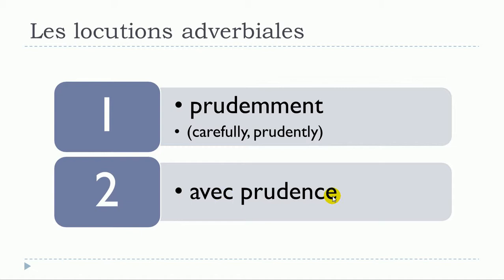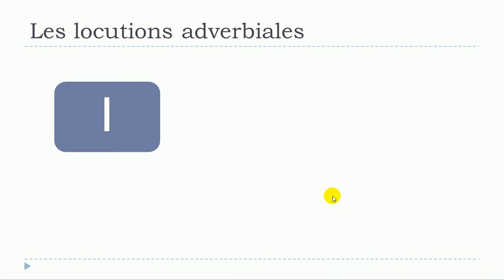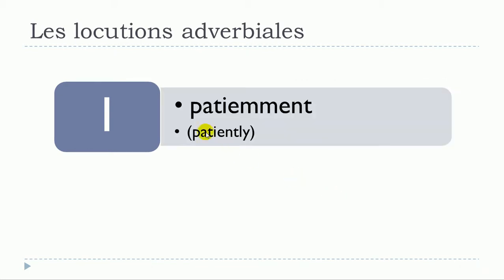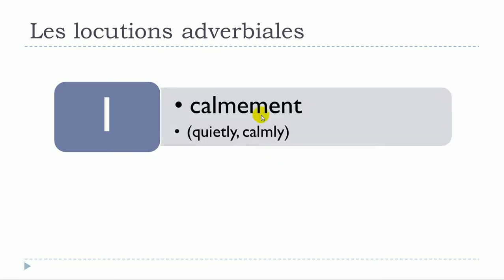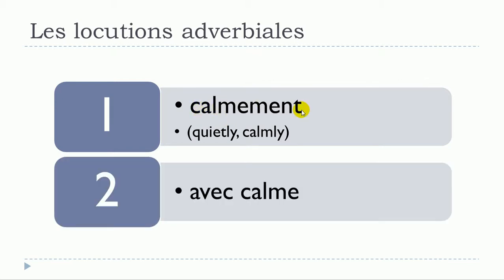Next: patiemment — patiently. In locution adverbiale, you could use avec patience. So either patiemment or avec patience. Then calmement — calmly. You could use avec calme. So either calmement or avec calme.